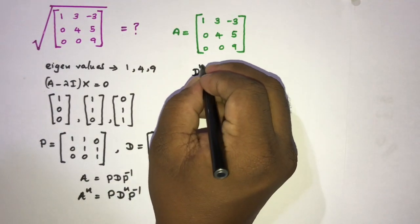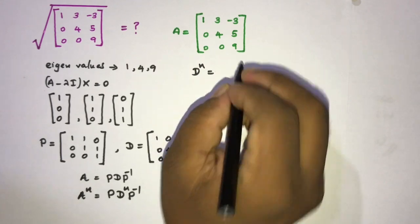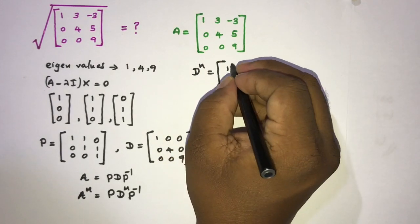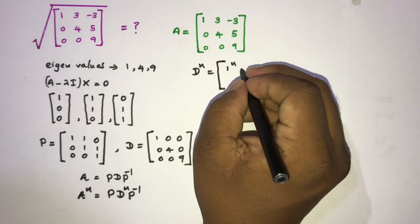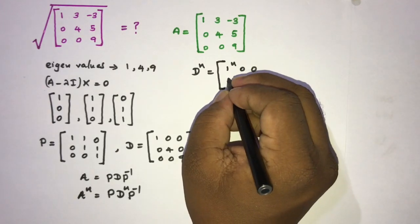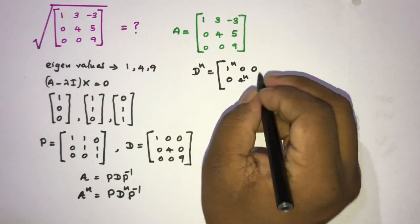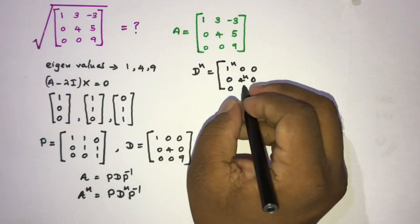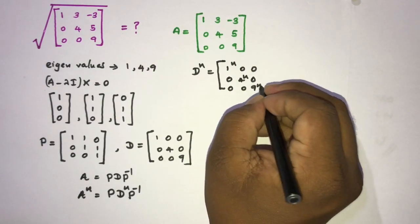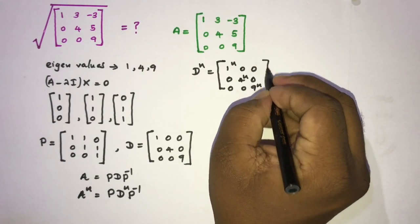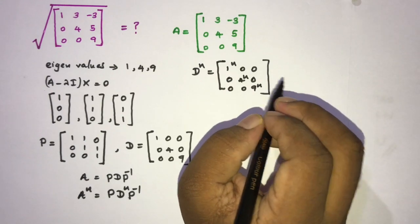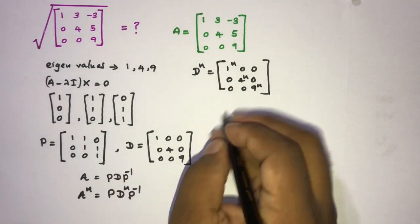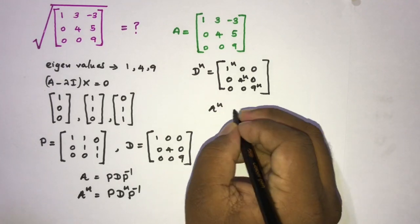If we write D^n, we can write D^n equal to the diagonal matrix with entries 1^n, 4^n, and 9^n — that is, diag(1^n, 4^n, 9^n). Then we can write A^n accordingly.